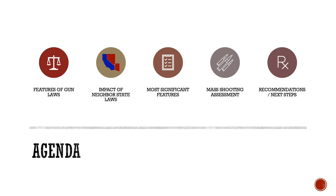We will start by conducting a brief overview of the information and structure in the database itself. We'll then move on to a discussion about the impact of weak laws in neighboring states. With these items in place, we can then zero in on the features of gun laws that result in the most significant reduction in homicide rates. Following this is an assessment of the regulatory impacts on mass shootings, and then finally we'll close out with some recommendations and next steps.